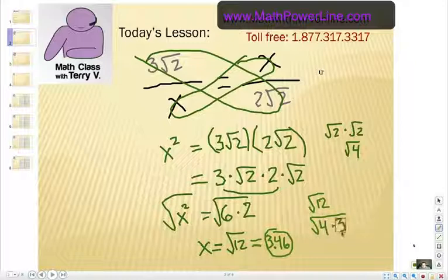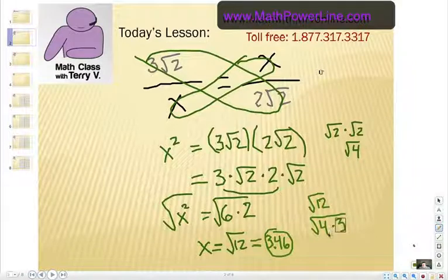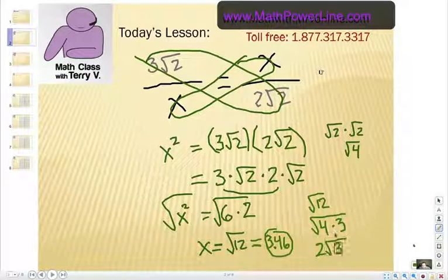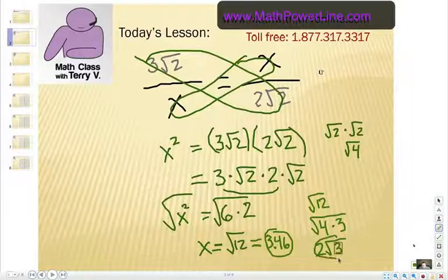So, radical 12 could be thought of as radical 4 times 3. Now, you know that radical 4, square root of 4 is 2, so that will go on the outside, and the 3 stays inside the radical. So, 2 square root of 3.